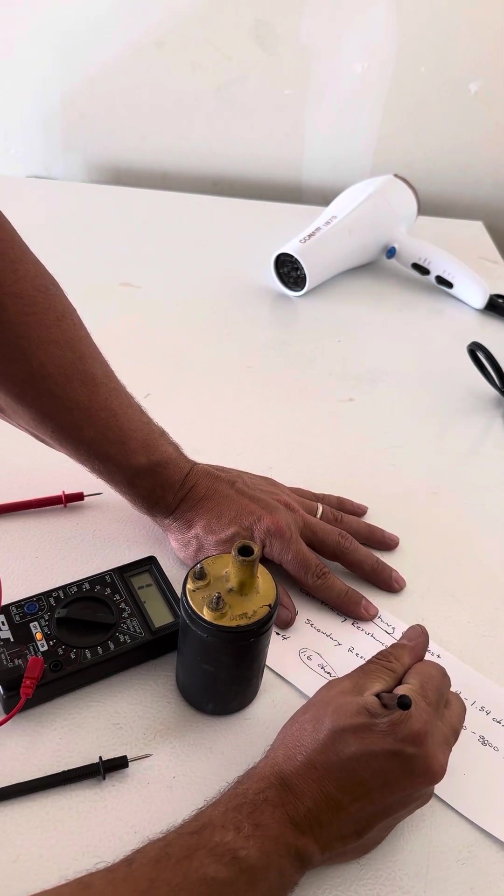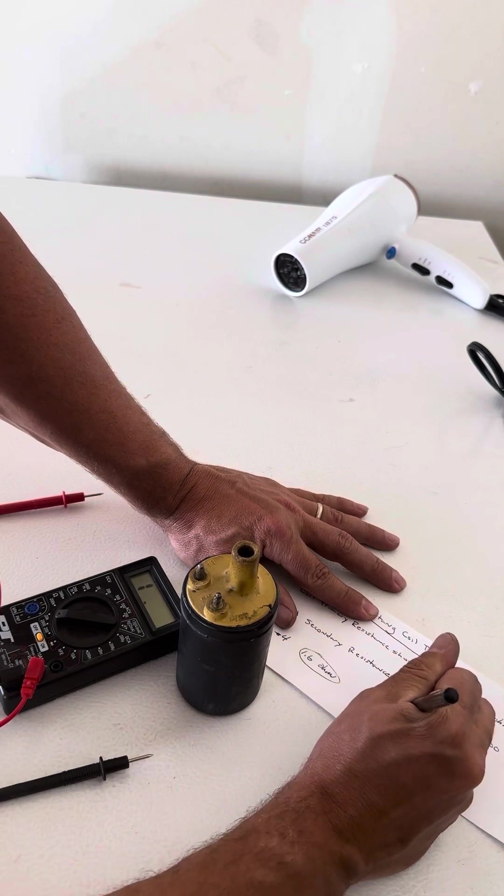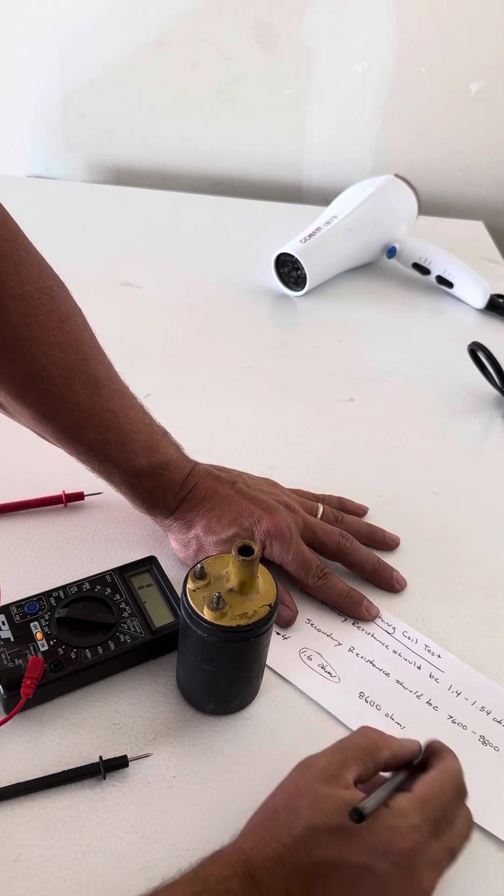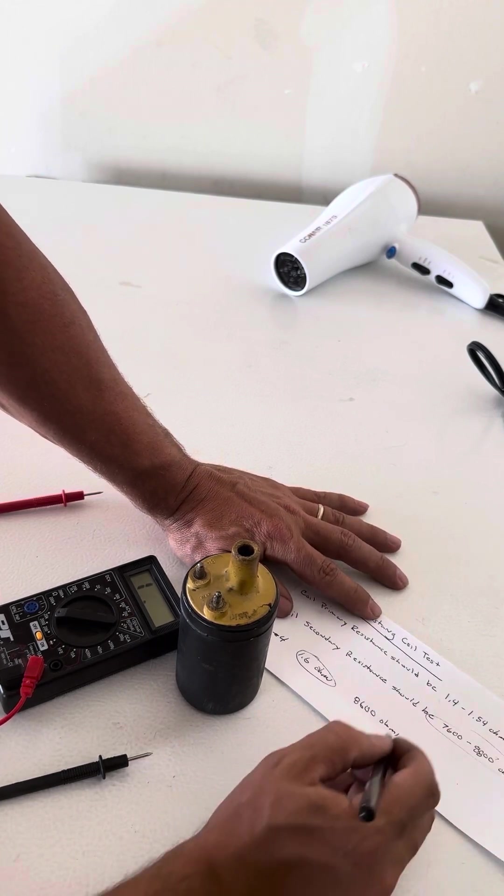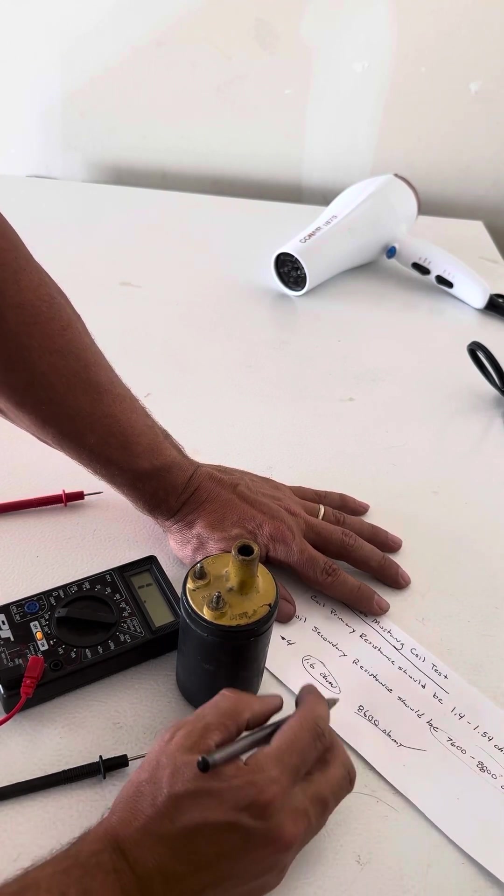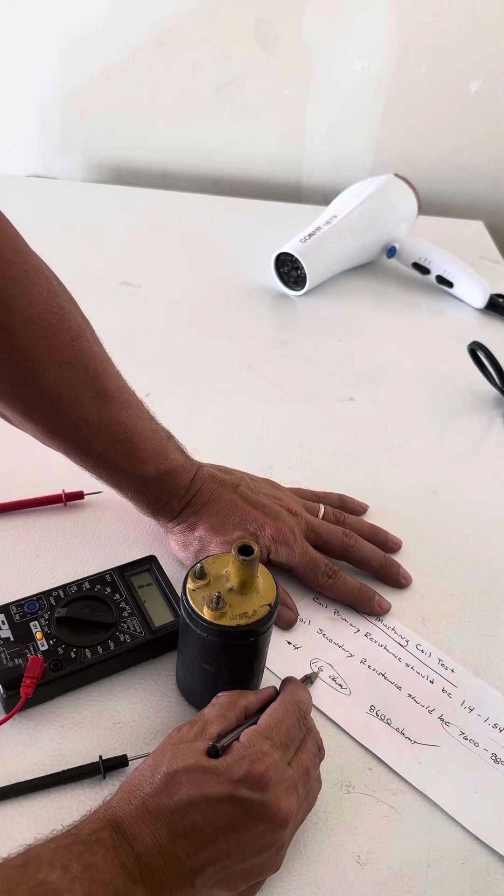So we're at 8600 ohms, and that falls within the secondary resistance window, so we're good there. It might be a little high on the primary.